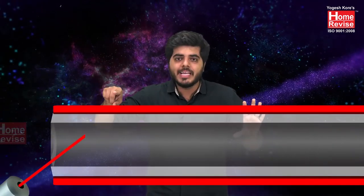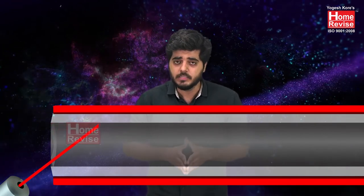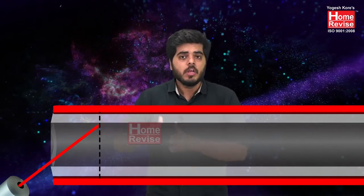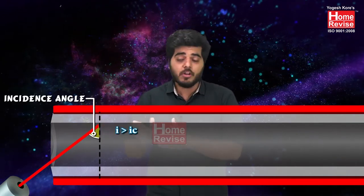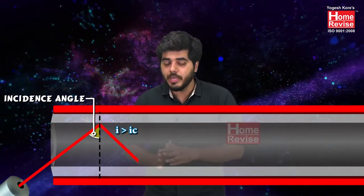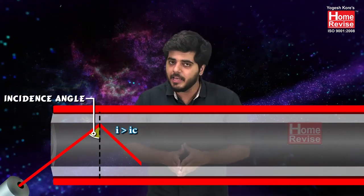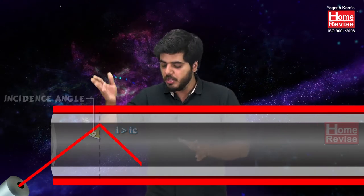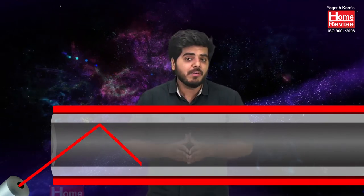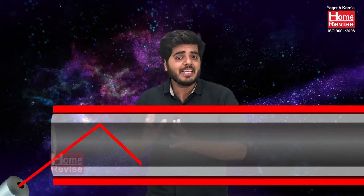As light arrives and strikes the surface, we make sure that the angle of incidence is greater than the critical angle of incidence. First, we draw a line perpendicular to the surface — that is the normal. If the angle of incidence is greater than the critical angle of incidence, the ray of light suffers reflection. If refraction were to occur, light would go outside the wire — we don't want those losses. So we use total internal reflection. The light reflects and hits the bottom surface.